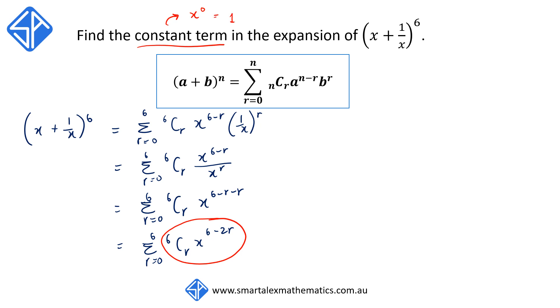So what we now do is we're going to equate x to the 6 minus 2r to be equal to x to the 0. Since the bases are the same, we equate the indices. We get 6 minus 2r is equal to 0, 2r is equal to 6, and therefore r is equal to 3.